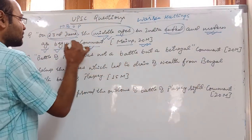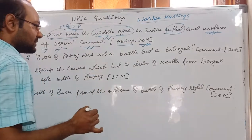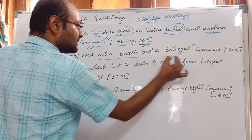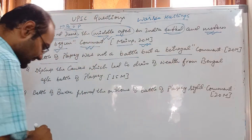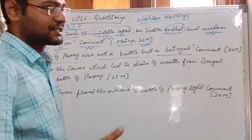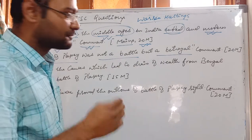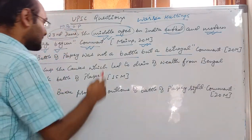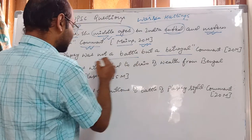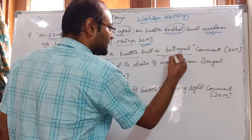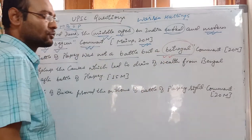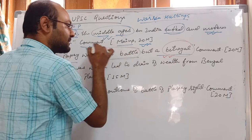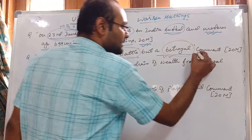If you have gone through the lecture on the Battle of Plassey and its significance, you can answer this question easily. The second question was: 'The Battle of Plassey was not a battle but a betrayal.' We have already seen that R.C. Majumdar said Plassey was a transaction in which rich bankers of Bengal sold out the Nawab to Robert Clive. We also saw the roles of Omichand, Rai Durlabh, Jagat Seth, and Mir Jafar — so it was clearly a conspiracy, not a battle.